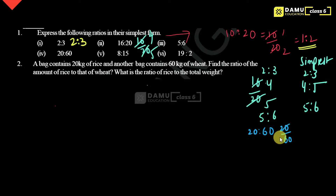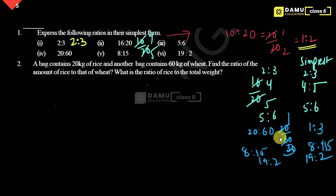Then 20:60, that is 20 by 60 — 20 ones are 20, 20 threes are 60 — so that is 1:3. Then 8:15: can we reduce 8:15 with any common factor? No, it is not possible. So 8:15 is already in simplest form. Then 19:2 is also 19:2 only.